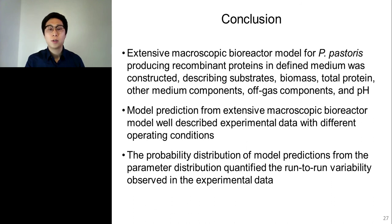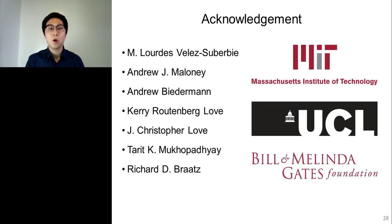To conclude, this work constructed an extensive macroscopic bioreactor model for Pichia pastoris describing substrates, biomass, total protein, other medium components, off-gas components, and pH. Model predictions from the constructed model well described experimental data with different operating conditions. Furthermore, the probability distribution of model predictions from the parameter distribution quantifies the run-to-run variability observed in the experimental data. I would like to acknowledge my coworkers and the funding source, the Case Foundation. Thank you all for your attention.